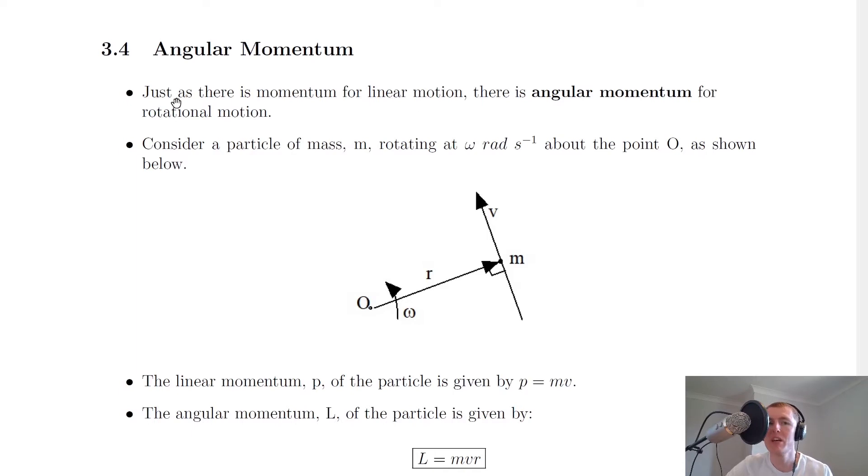So it says here for angular momentum, just as there is momentum for linear motion, there is also angular momentum for rotational motion. Consider a particle of mass m rotating at omega radians per second about the point O as shown below.